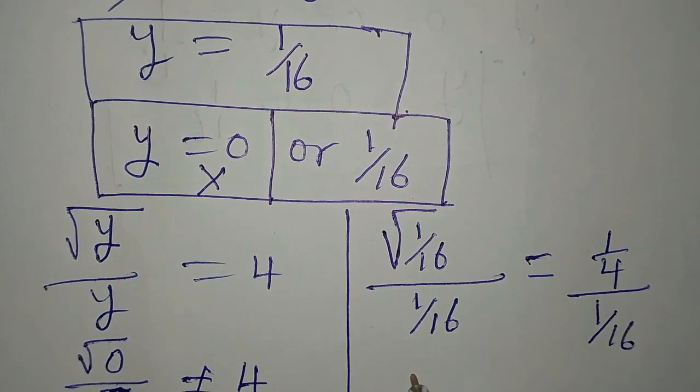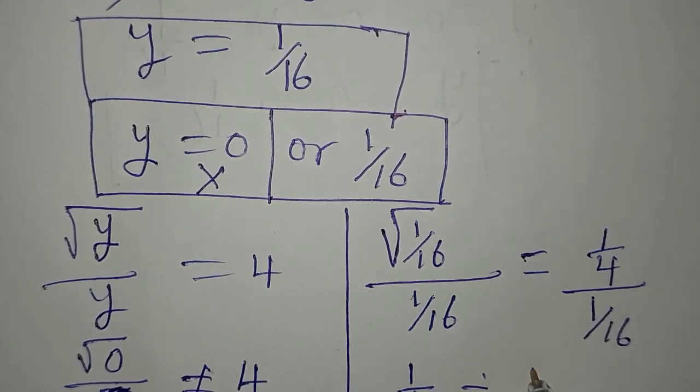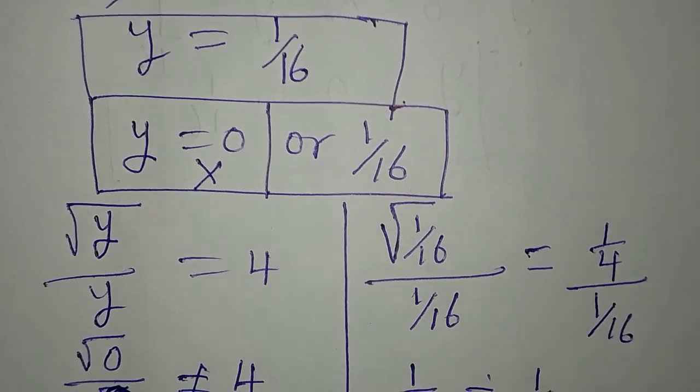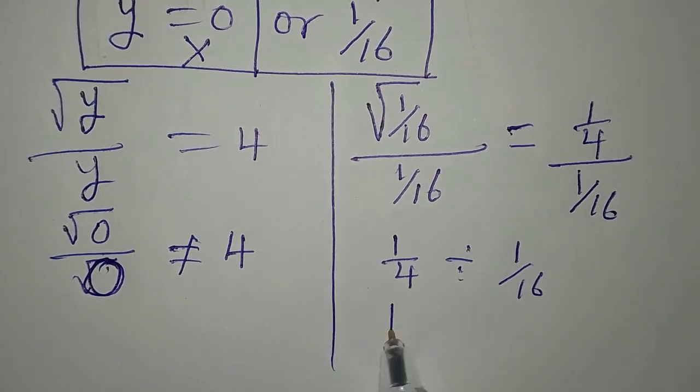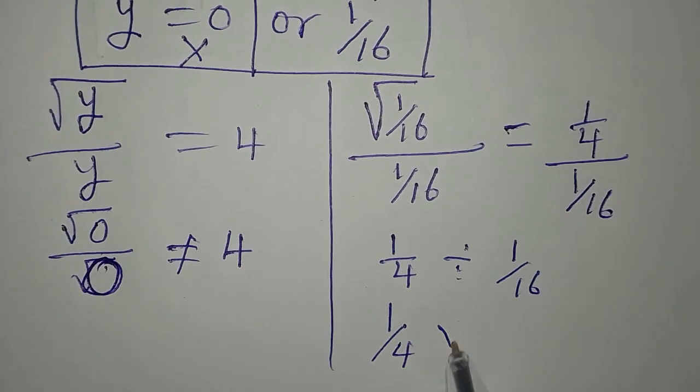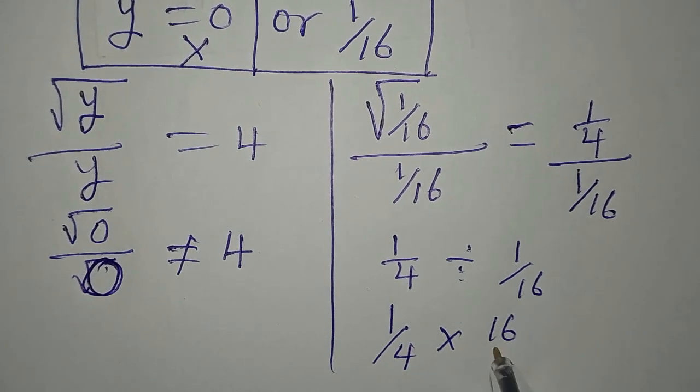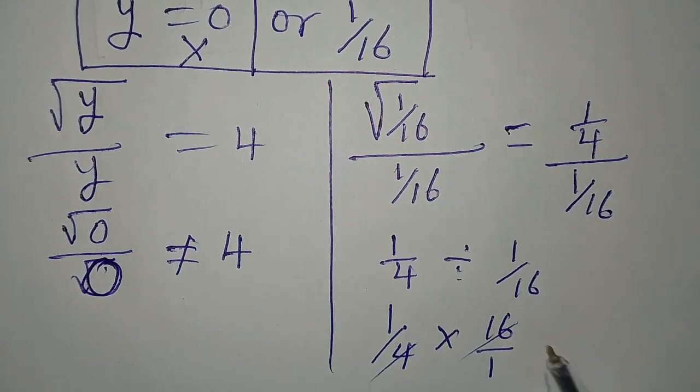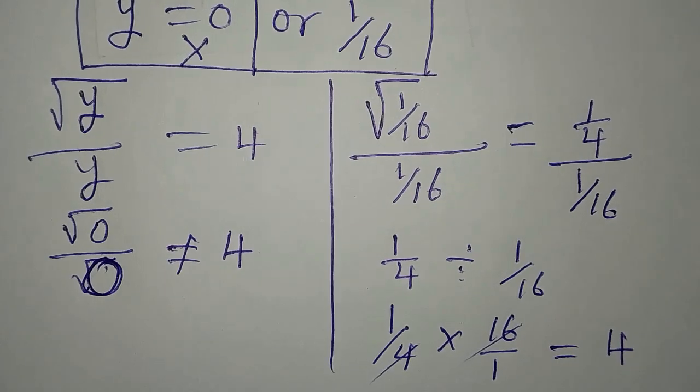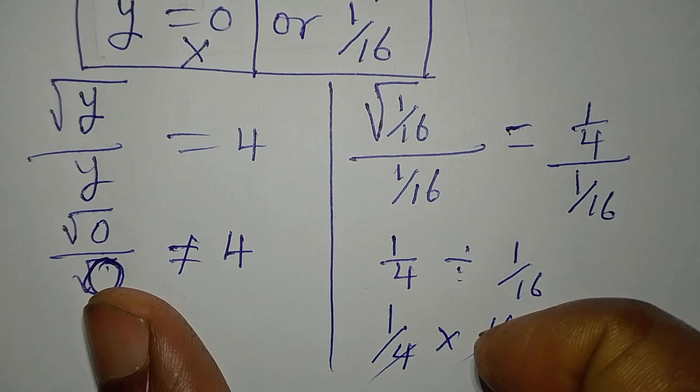Now this is 1 over 4 divided by 1 over 16. We turn this to multiplication and we get 1 over 4 times 16 over 1. Now 4 will go there 4 times, and this is giving us 4 over 1, which is the same as 4. So this means that y to be equal to 1 over 16 is very satisfying.